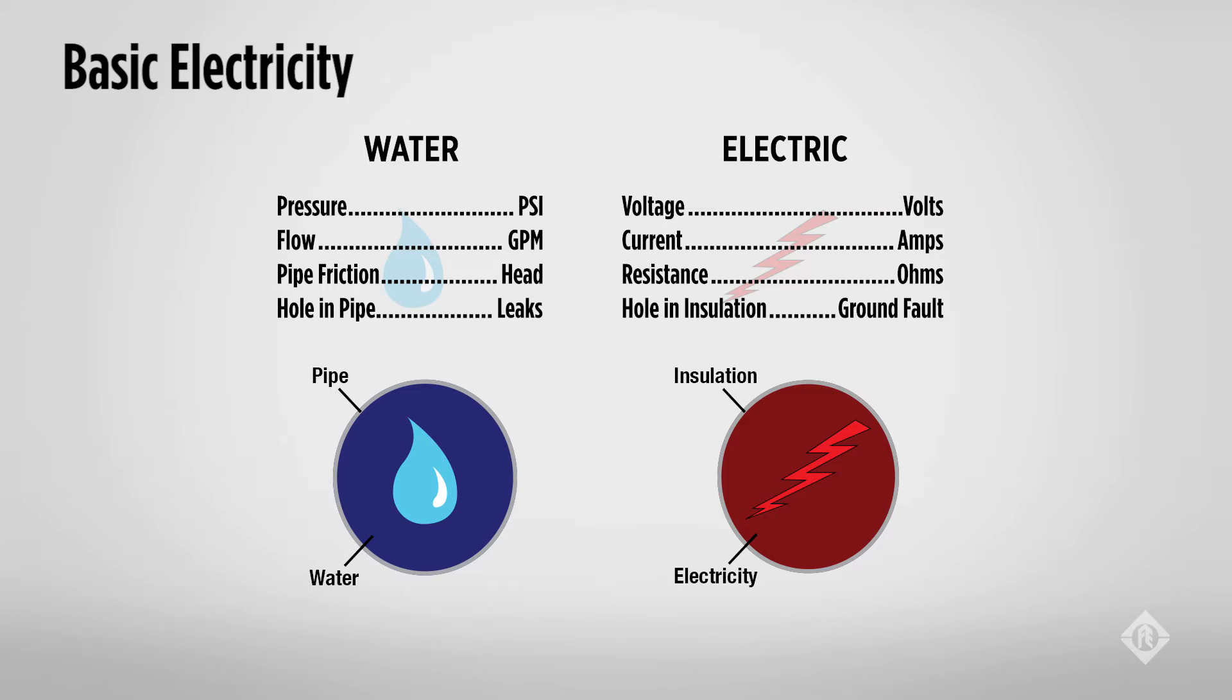One big difference is that a hole in a water pipe will get things wet, but a hole in insulation can result in electrical shock hazard.